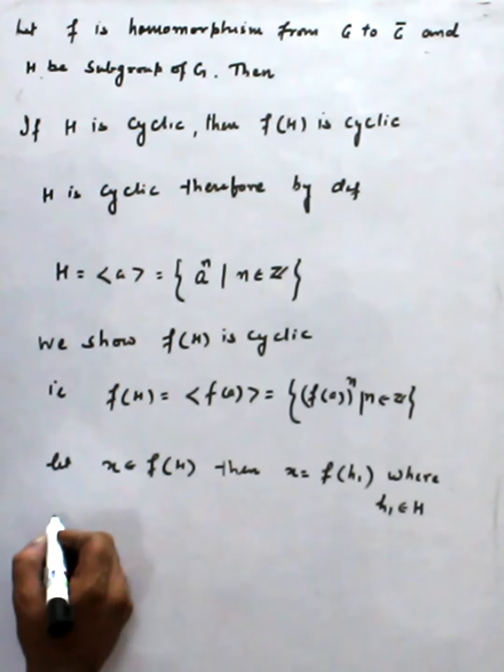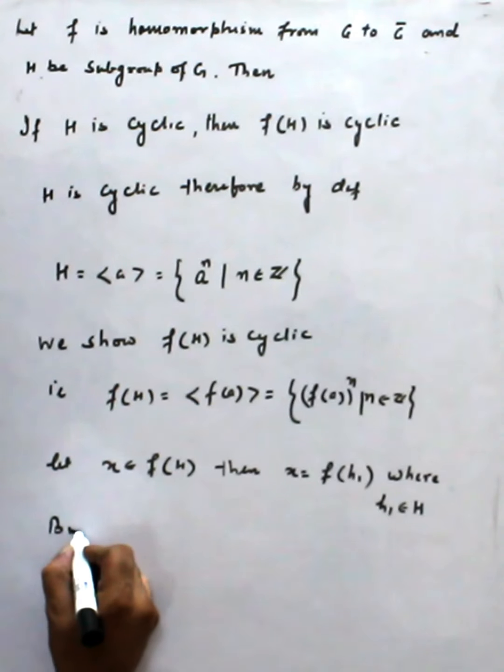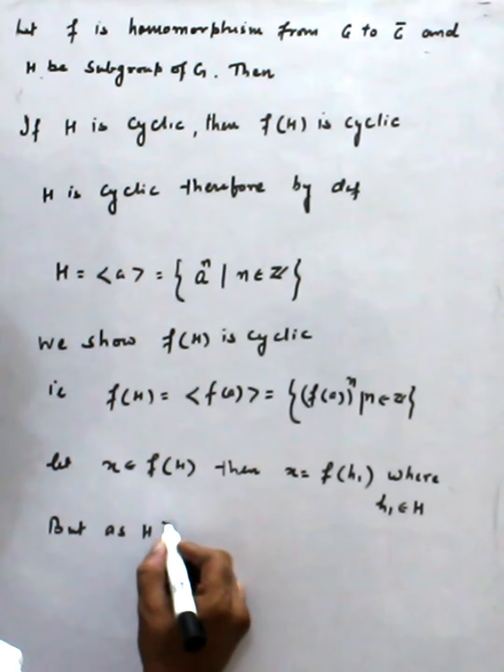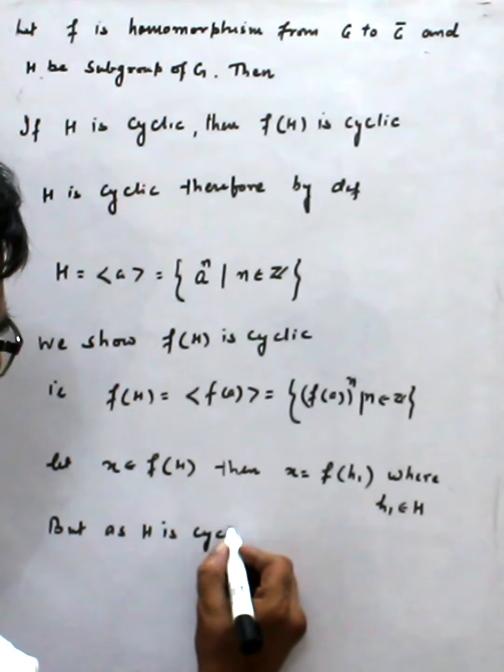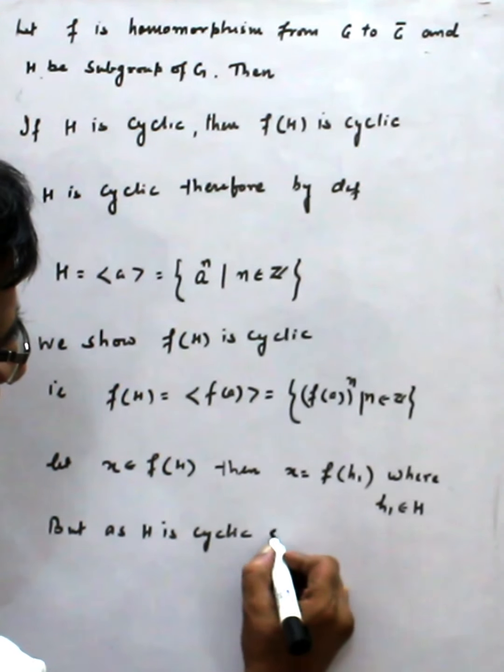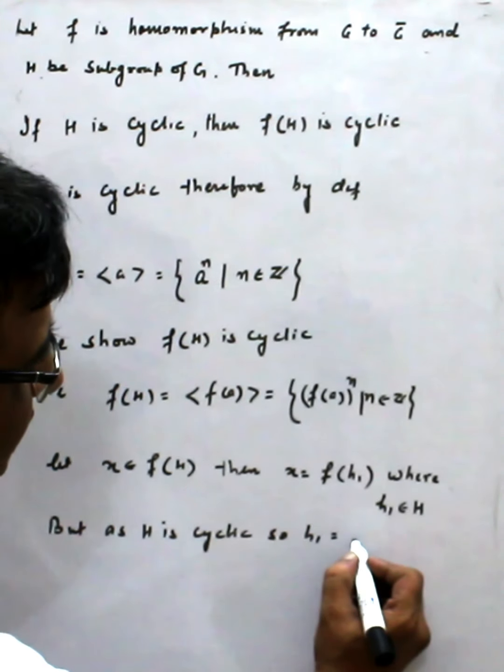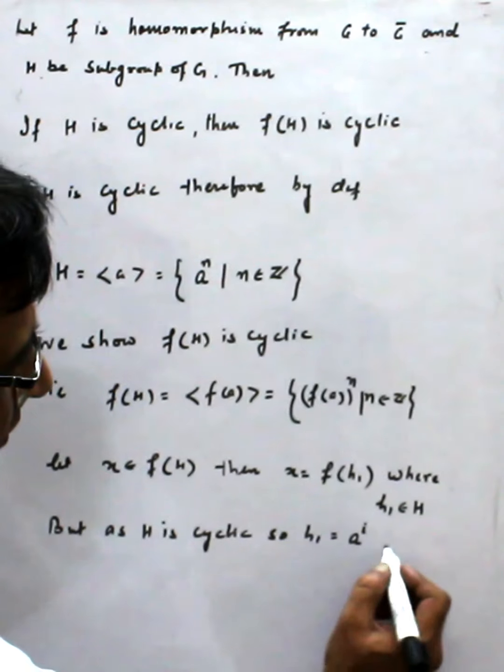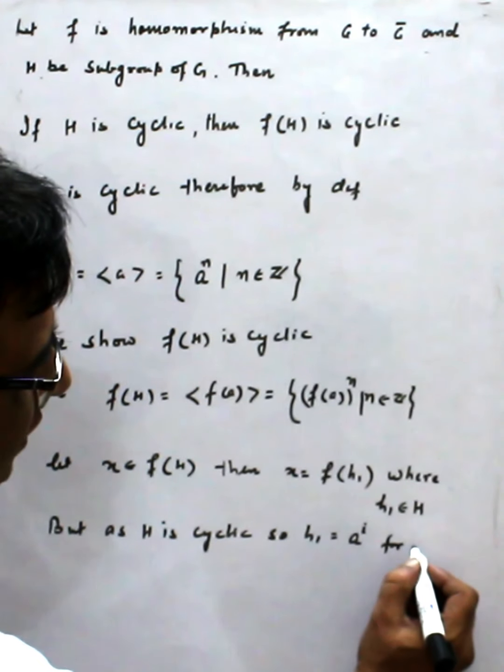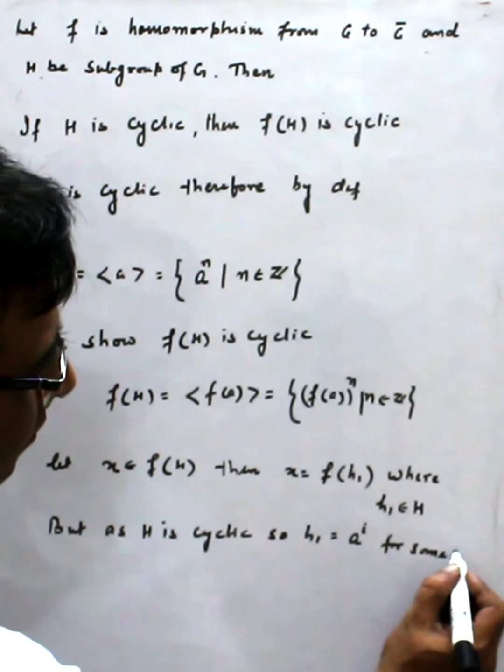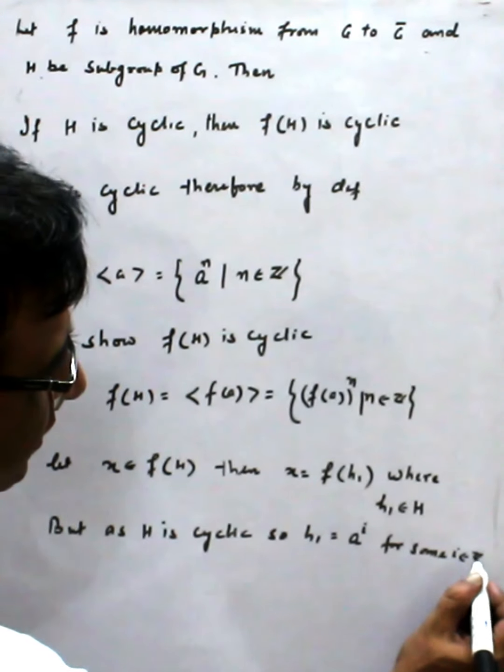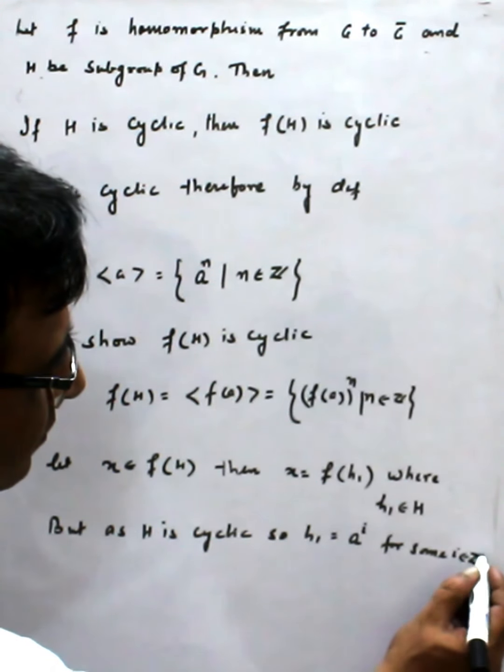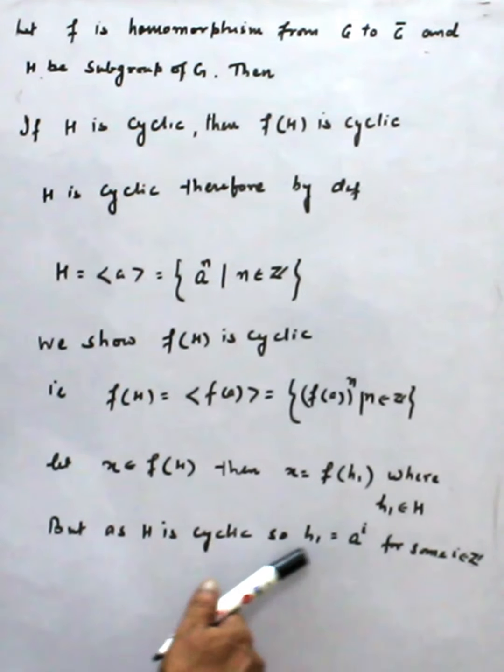But as H is cyclic, h₁ is equal to some a^i for some i belong to Z. It is in this form.